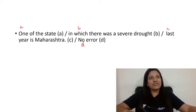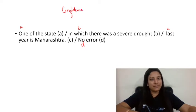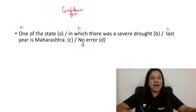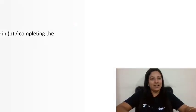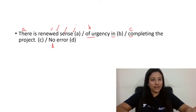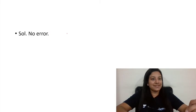Many students say they don't feel confident when there is no error. For that confidence, you need to keep your concepts clear. If you know that 'sense of urgency' is correct and 'in completing the project' is correct, you won't mark it as an error. You will confidently mark 'no error'. Concept clarity is the key.